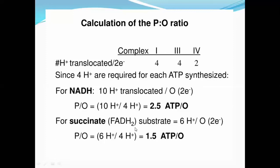This is the overall calculation for the P/O ratio — how many electrons are accepted by oxygen, and as a result, how much ATP is produced. NADH gives 2.5 ATP and FADH2 gives 1.5 ATP.